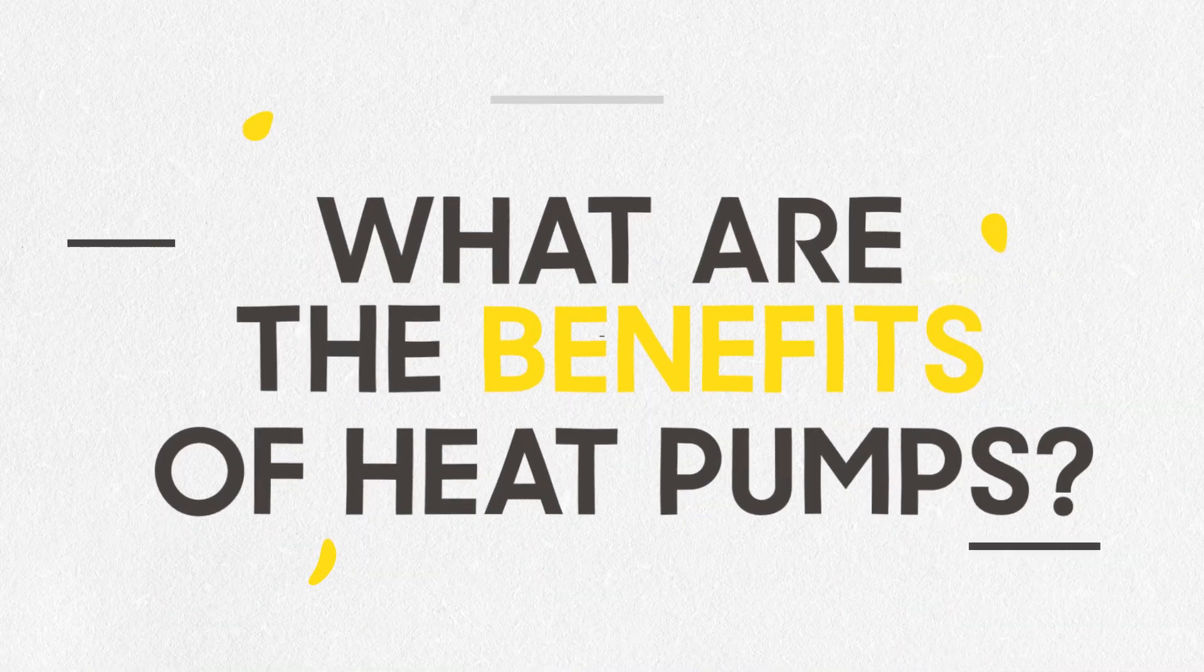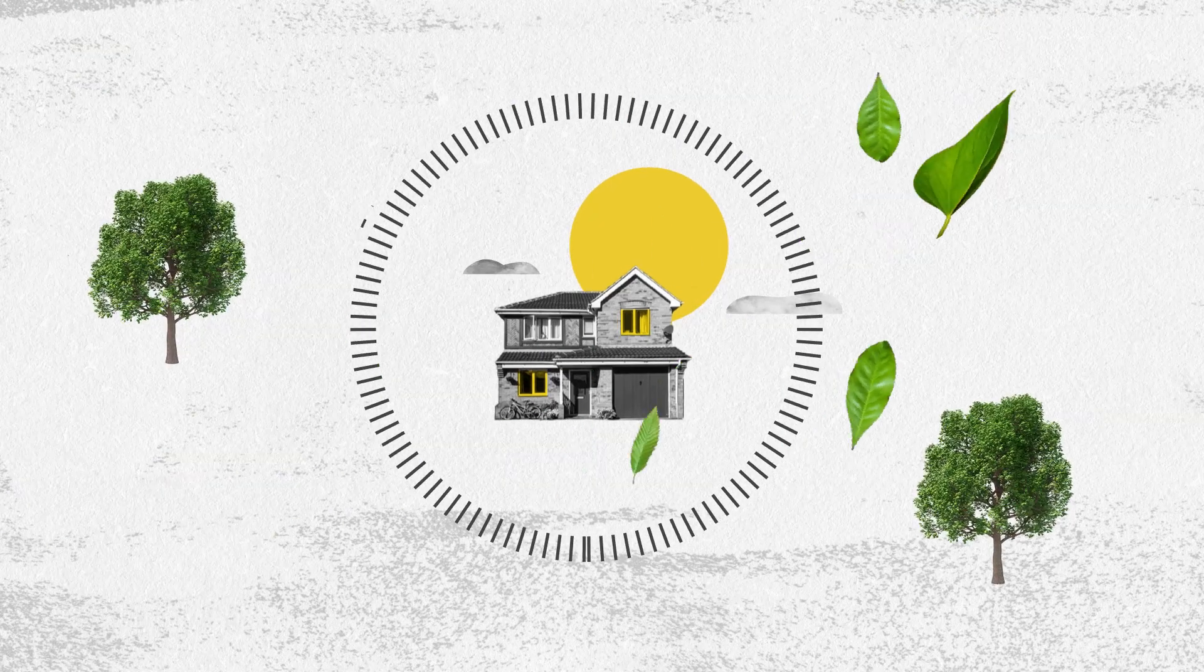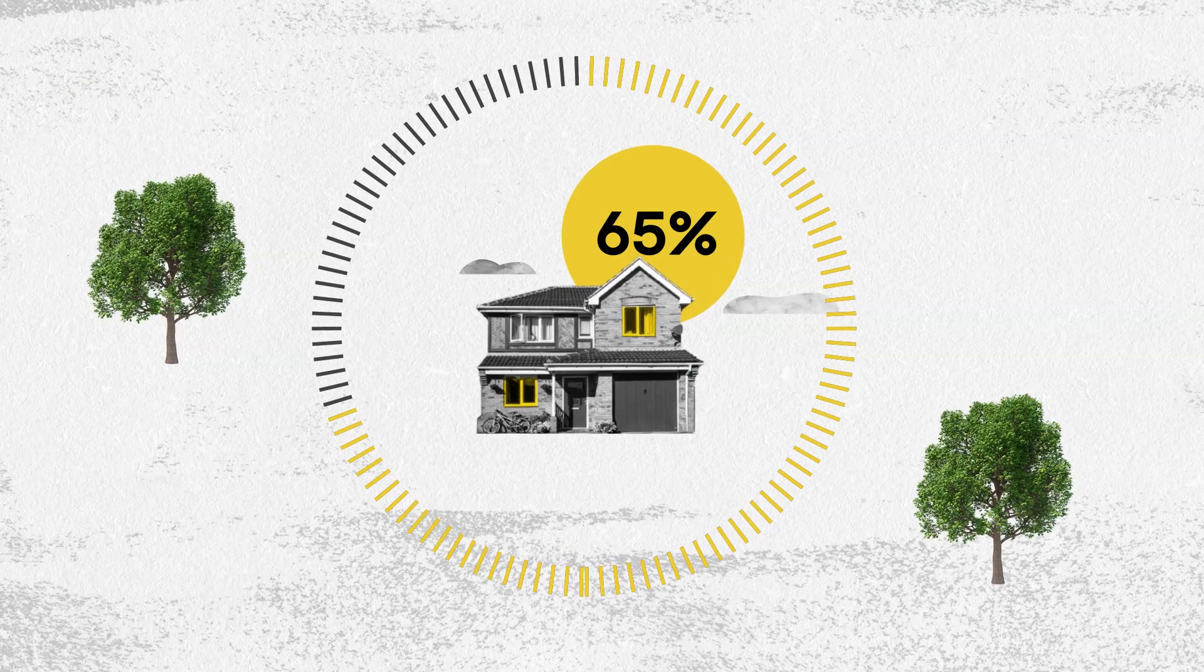What are the benefits of heat pumps? When installed properly, heat pumps are around four times as efficient as modern boilers. And they cut the average home's carbon footprint by around 65%.